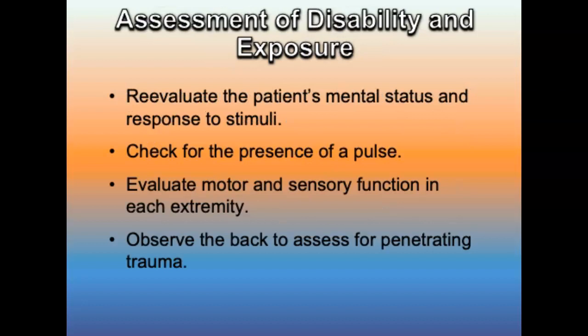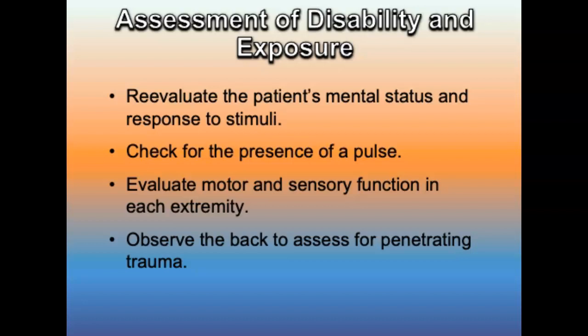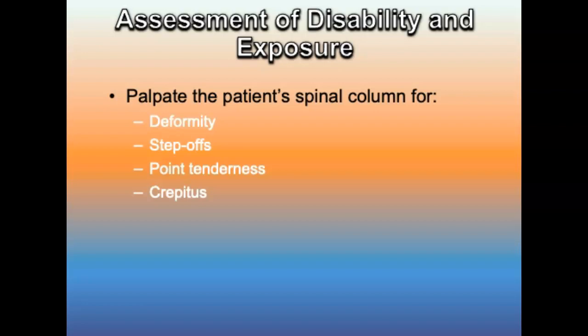Restrict IV fluid use for patients with severe closed head injury. Patients in pure neurogenic shock may need vasopressors. Use a cardiac monitor with every critically injured patient and consider transcutaneous pacing for refractory symptomatic bradycardia. Re-evaluate the patient's mental status and note any changes since initial contact. Check for the presence of a pulse, evaluate and monitor sensory function in each extremity, and directly observe the back to assess for penetrating trauma. Palpate the spinal cord for deformity, step-offs, point tenderness, and crepitus.